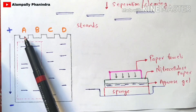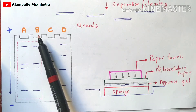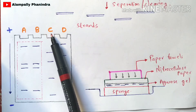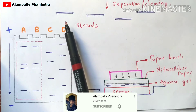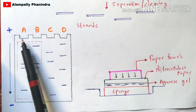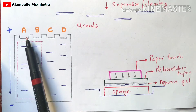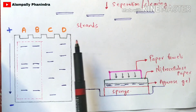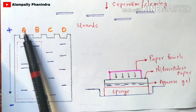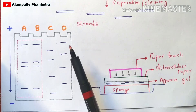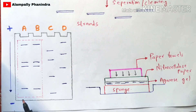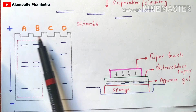The strands obtained from bacteria B are placed in the B well, strands from C bacteria in the C well, and D bacteria strands in the D well. After placing the strand molecules in the wells, you apply a voltage current. Here one end is the positive electrode and the other is the negative electrode. Once electricity is applied to the agarose gel, migration of the strands occurs from the positive electrode toward the negative electrode, moving in the downward direction.